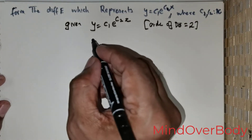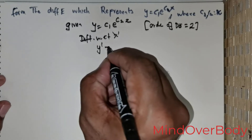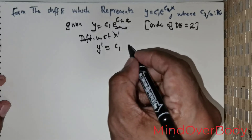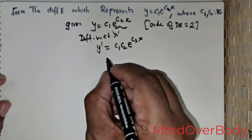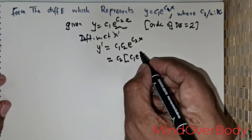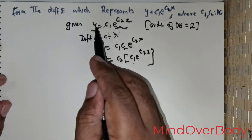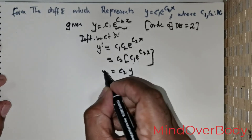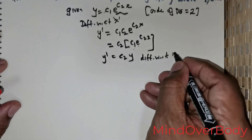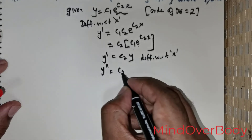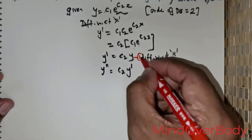Differentiating with respect to x: y' = c₁·e^(c₂x)·c₂ = c₂·(c₁·e^(c₂x)). Since c₁·e^(c₂x) = y, we can write y' = c₂·y. Differentiating again with respect to x: y'' = c₂·y'. This is equation 2, and y' = c₂·y is equation 3, with the original being equation 1.